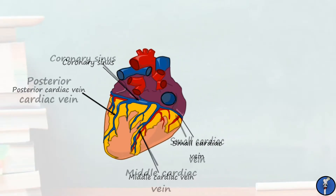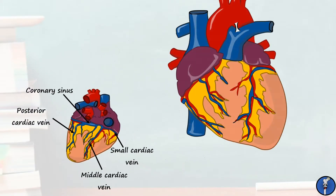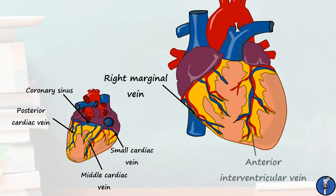On the anterior surface, we see the right marginal vein, which will join the small cardiac vein, and the anterior interventricular vein, which travels with the anterior interventricular artery. This vein eventually joins the great cardiac vein, which will travel around to the other side of the heart to produce the coronary sinus.